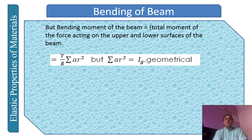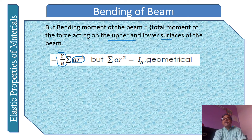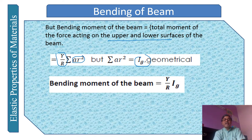The bending moment equals the total moment of force from the upper and lower surfaces. Taking Y/R as constant outside the summation: bending moment = (Y/R) × Σ(A·r²). The term Σ(A·r²) is called the geometrical moment of inertia, represented by I_z. Therefore, the bending moment of the beam equals Y·I_z / R.